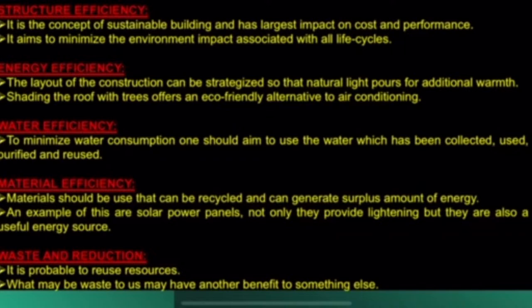Water Efficiency: to minimize water consumption, one should aim to use water which has been collected, purified, and reused. Material Efficiency: materials should be used that can be recycled and can generate a surplus amount of energy. An example of this are solar power panels — not only do they provide lighting, but they are also a useful energy source. Waste Reduction: it is possible to reuse resources; what may be waste to us may have another benefit elsewhere.